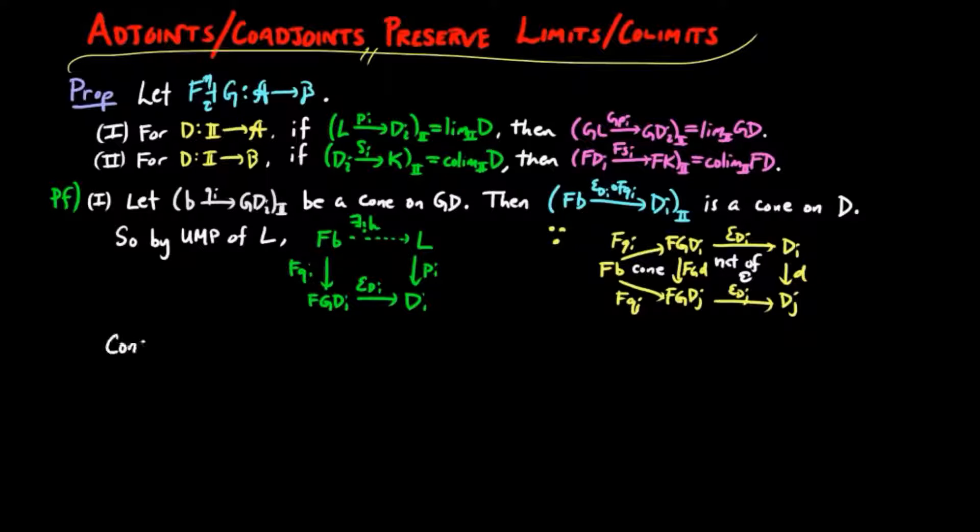Now consider the following diagram. The right-hand square commutes because it is the image of the square above under the functor G, which preserves commuting diagrams. The left square commutes by naturality of η.